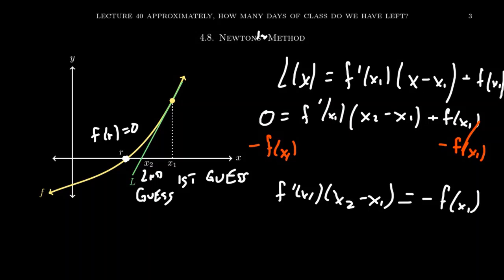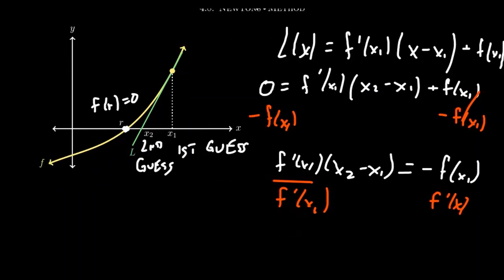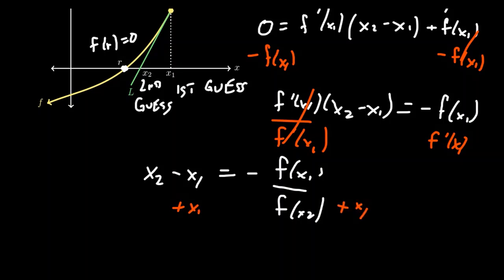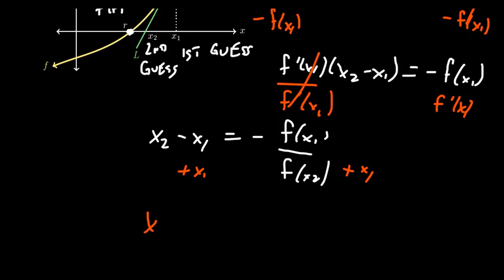Minus f of x1 minus f of x1, so that they cancel on the left-hand side. This gives us that f prime of x1 times x2 minus x1 equals negative f of x1. And so then we're going to divide both sides of the equation by f prime of x1.